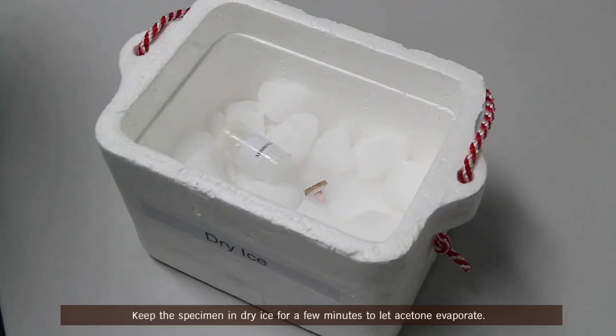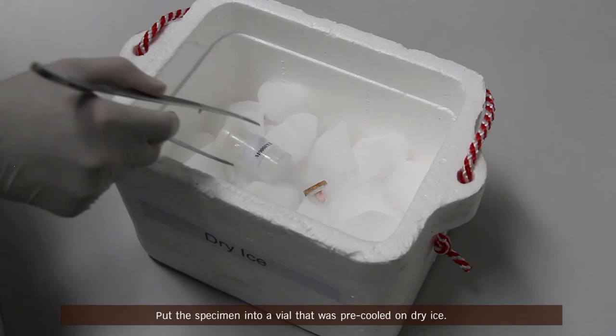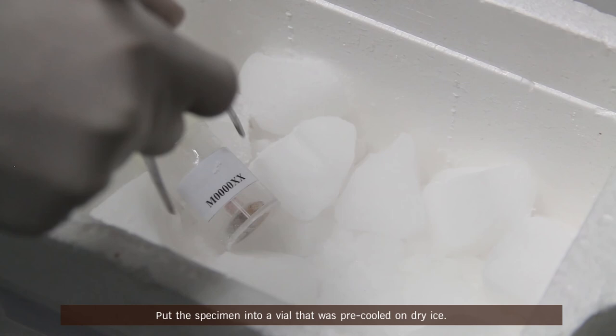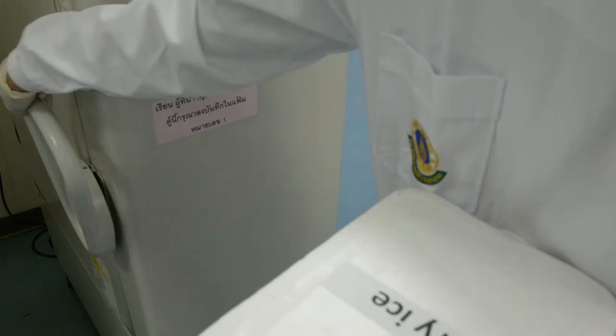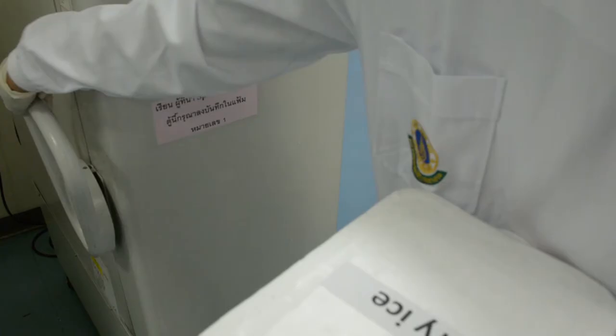Put the specimen into a vial that was pre-cooled on dry ice. Keep the specimen in deep freezer at minus 80 degrees Celsius or transfer to a referral laboratory with dry ice.